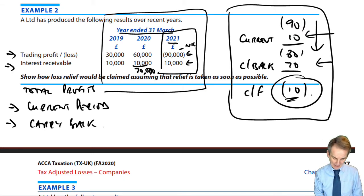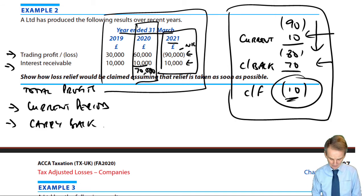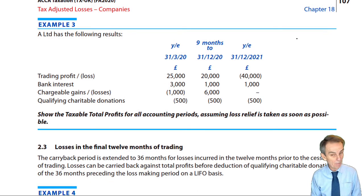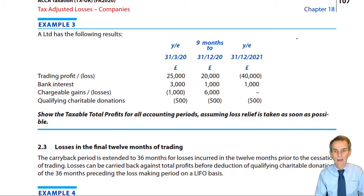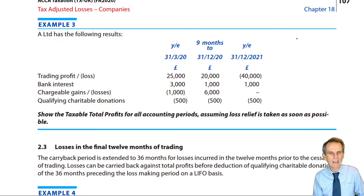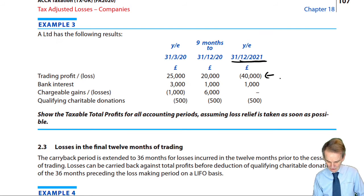Now, in this example, the previous accounting period was just another normal year-end. We now progress to look at example three, where we will immediately notice an important difference. It's one that's frequently tested in terms of exam questions, just to make the carry back claims a bit more interesting. We discover that the year-ended December 21 is our loss-making period, and that is a loss of £40,000.